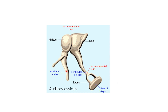The auditory ossicles are three in number: malleus, incus, and stapes. The stapes is the smallest bone of the body. These ossicles are the ear bones present in the middle ear.